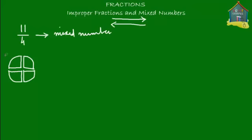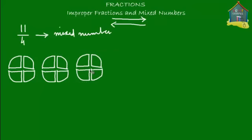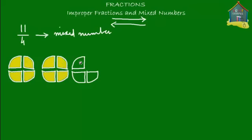We need 11 pizza slices, so let's copy and paste. We have 4, then 4 more to give us 8, and then we need 3 more to make 11. So we get rid of the extra one. Now we have 11 pizza slices. Let's color them: 1, 2, 3, 4, 5, 6, 7, 8, 9, 10, and 11. We have 11 pizza slices and 4 pizza slices make 1 pizza.